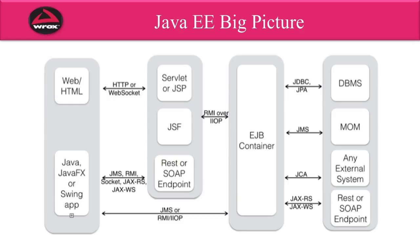There's also what we call the EJB container. The EJB container will basically hold special Java objects that contain your business logic. Finally, all the way on the back end on the far right, you have your resource tier or your data tier. This is where you have your database, your message-oriented middleware, or connections to any external system. This is Java EE at a very high level. I'll walk through and talk about some of these technologies in the following slides.